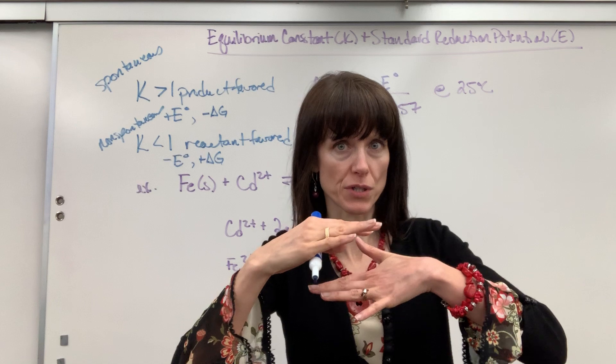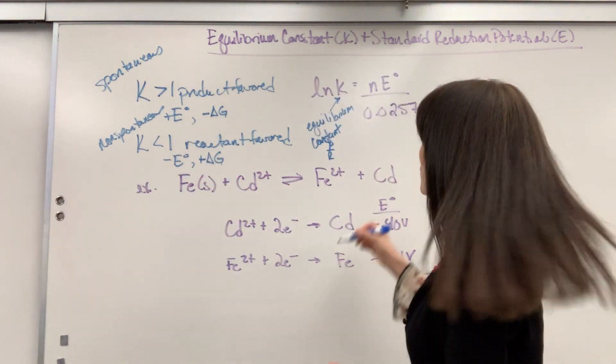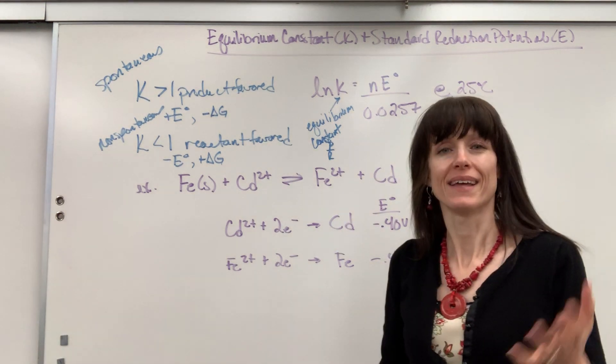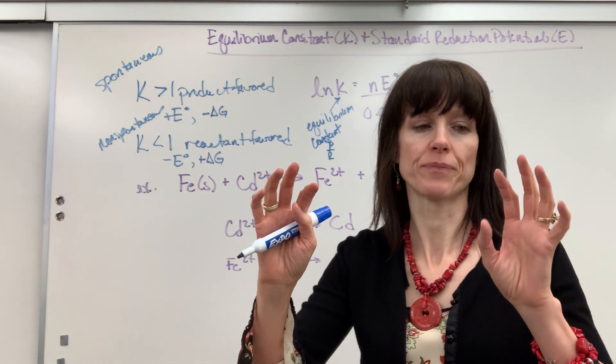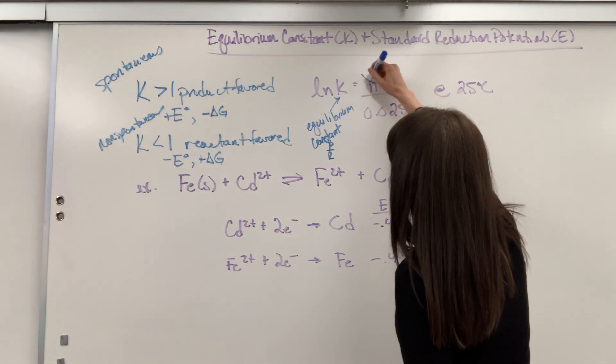When the reaction hits that beautiful equilibrium, forward rate equals reverse rate, and the reactant and product concentrations are constant. So you take products over reactants, that gives you a ratio of the concentrations of product over reactants at that beautiful equilibrium.